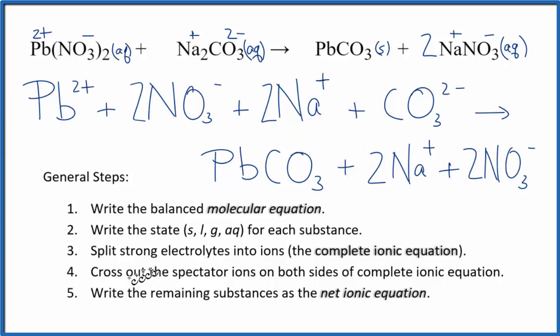So we can now cross out the spectator ions. Spectator ions, they're on both sides of the equation, reactants and products. They really haven't changed, so we can just cross them out. For example, we have 2 nitrate ions here. We have 2 nitrate here on the product side. So we can just cross those out. In the reactants, we have 2 sodium ions. 2 sodium ions in the products, we can cross those out. And that's going to leave us with our net ionic equation.